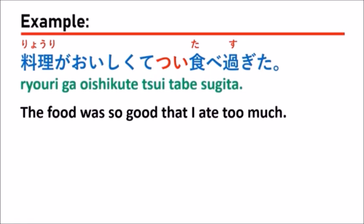In a situation like this, it's not your mistake by intention — it's not intentional from you. But you just sometimes make mistakes, like eating too much. So you can use つい as in: ついたべすぎた。 Something like this.